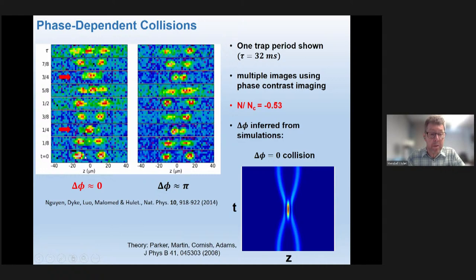These two mass lumps — these two solitons — collide at this point. Then they pass through one another because it turns out that they're solutions of an integrable equation, the nonlinear Schrödinger equation. Because it's integrable, there are conserved quantities, and one of them tells us that the solitons are not going to change shape or speed or amplitude. So they don't. They pass through one another and come back, doing it again after three quarters of a period of this oscillator, and then they do this ad infinitum.